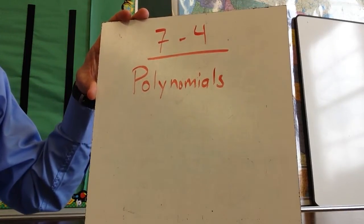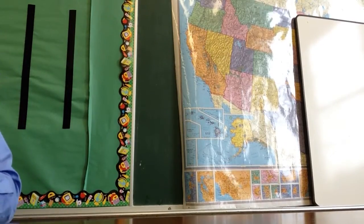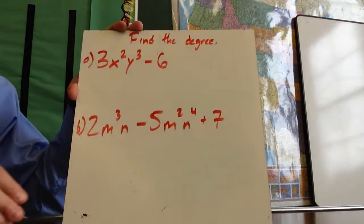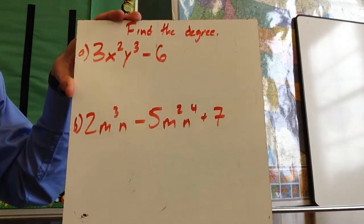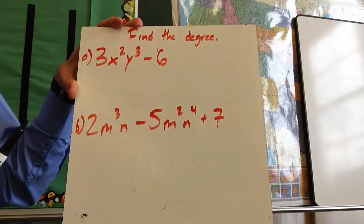Today's video we'll discuss Chapter 7-4, Polynomials. We're going to start with finding the degree of a polynomial, and the idea here is that we're going to use the exponents to help us. The exponents will tell us what degree each of these terms of the polynomial is.